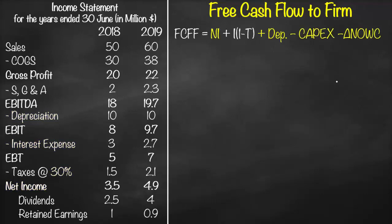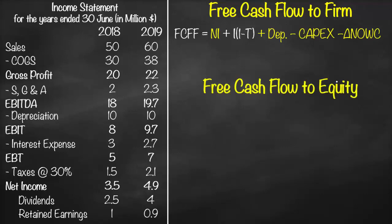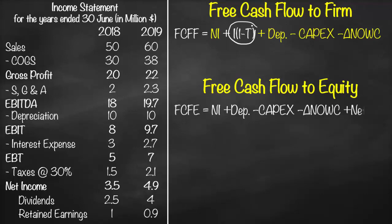We can also calculate free cash flow to equity from free cash flow to firm using the same concept. Free cash flow to equity is the cash flow available to shareholders only. Since we're allowed to pay debt holders, we remove interest multiplied by (1 - tax rate) from the formula. The FCFE formula becomes: net income plus depreciation minus capital expenditure minus change in net operating working capital, then we add net debt.